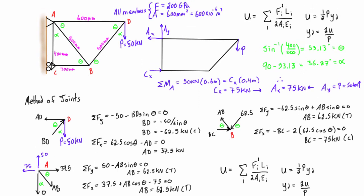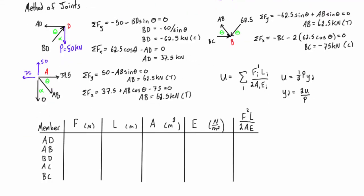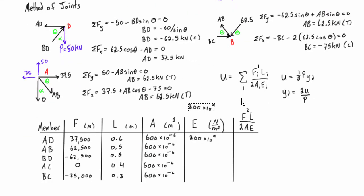Right, so we have all of the internal forces that we calculated in here, all of the lengths are given to us on the original drawing. We know that E is 200 gigapascals and area is 600 millimeters squared, so we can just go and drop all of that into the table.